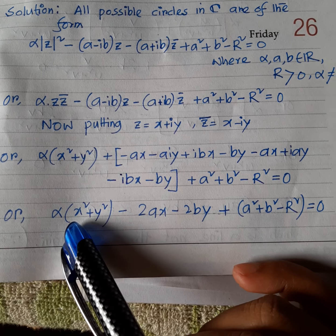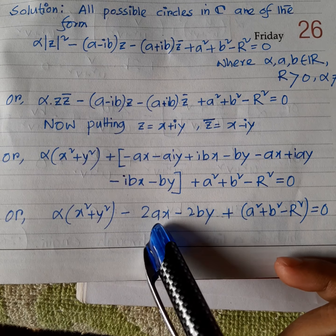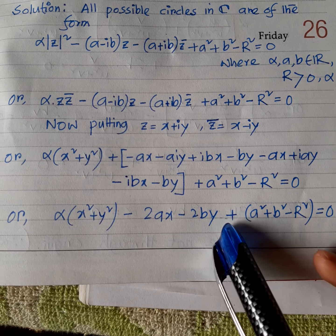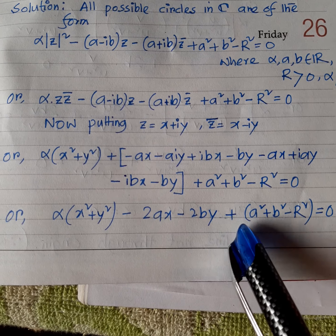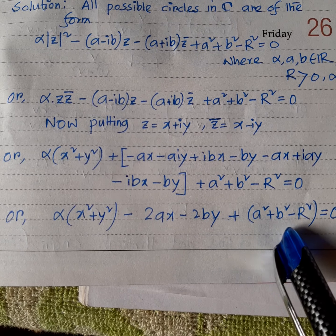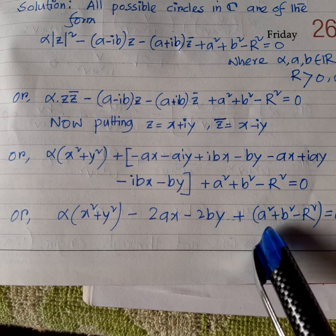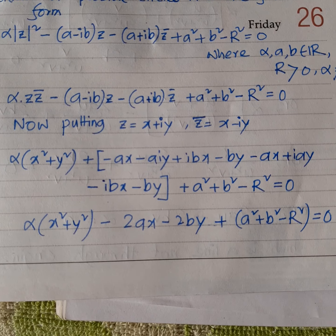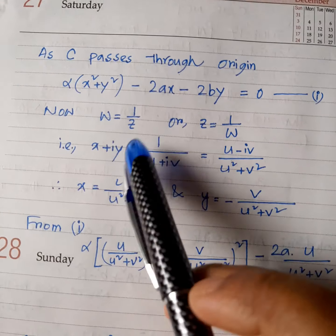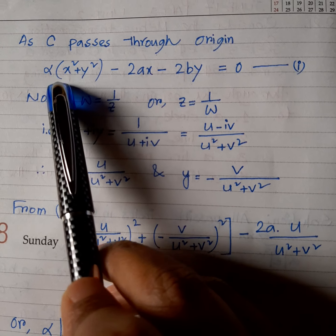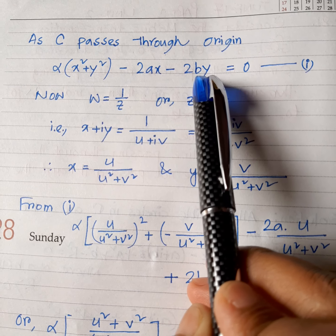After simplification, the expression becomes: α(x² + y²) − 2ax − 2by + (a² + b² − r²) = 0. Since C passes through the origin, the constant term a² + b² − r² vanishes, so the expression reduces to: α(x² + y²) − 2ax − 2by = 0. We label this as equation (1).